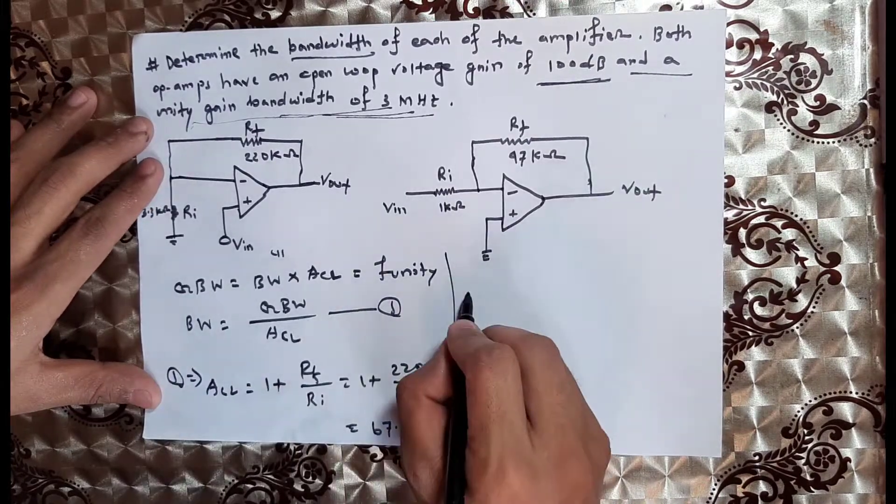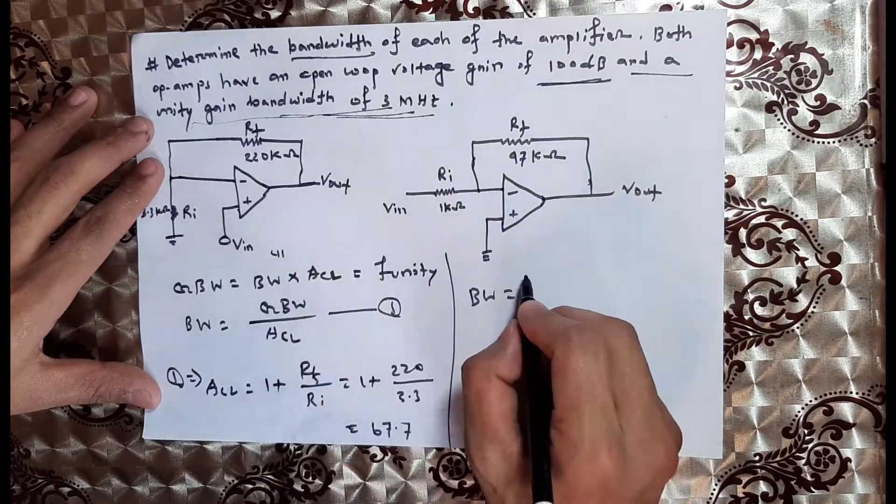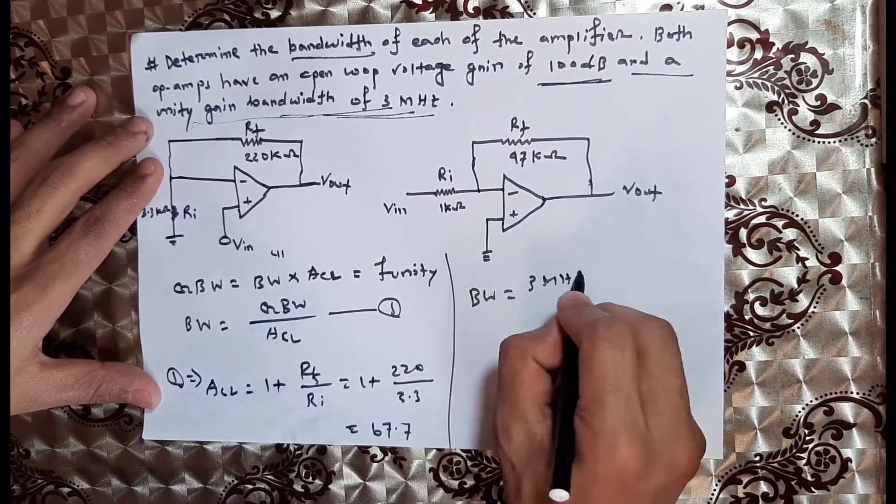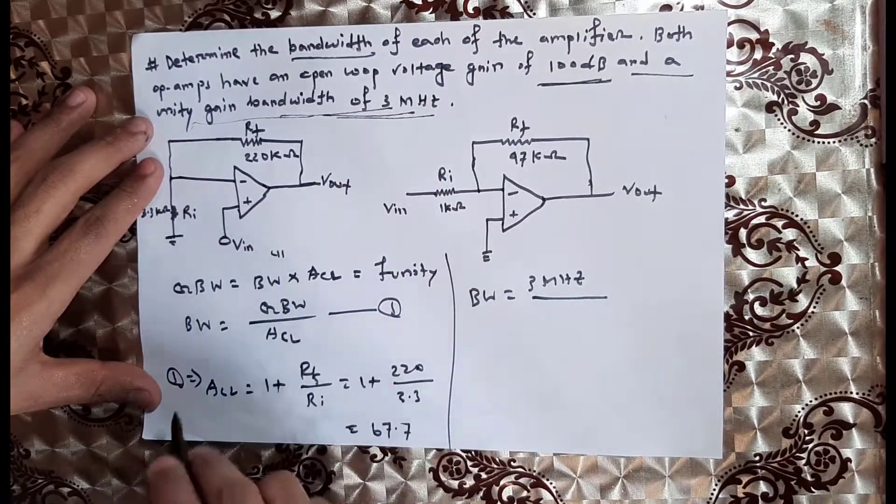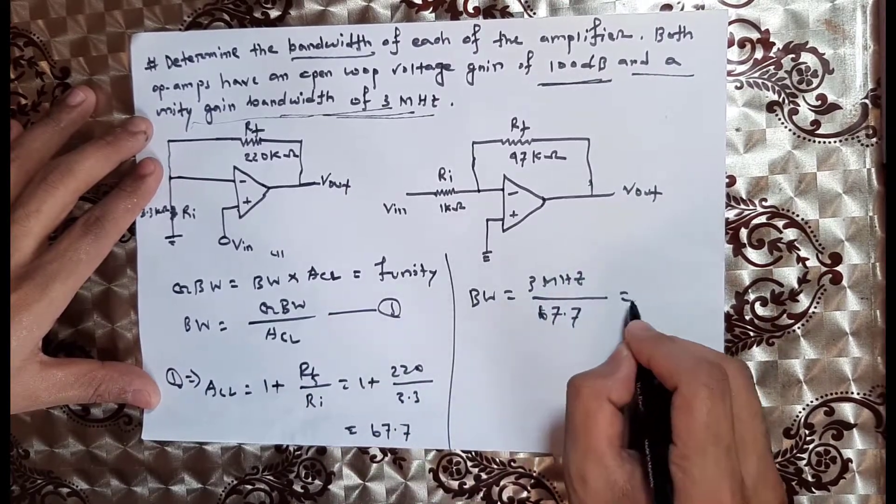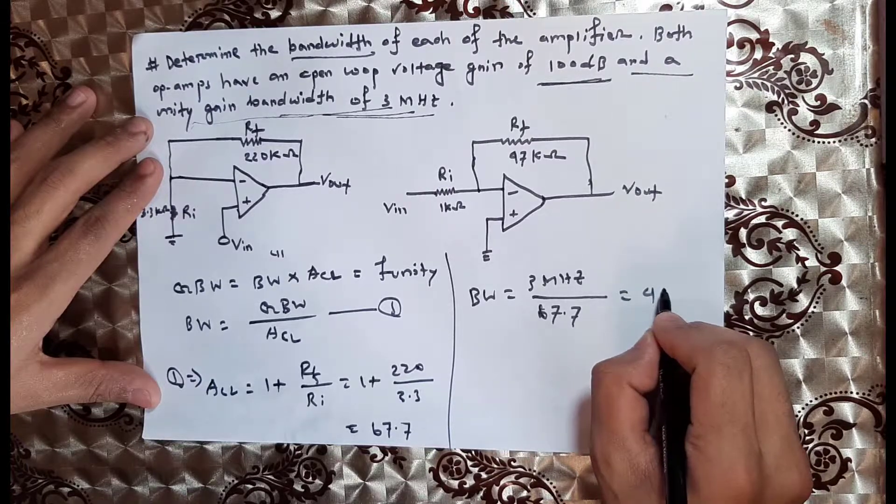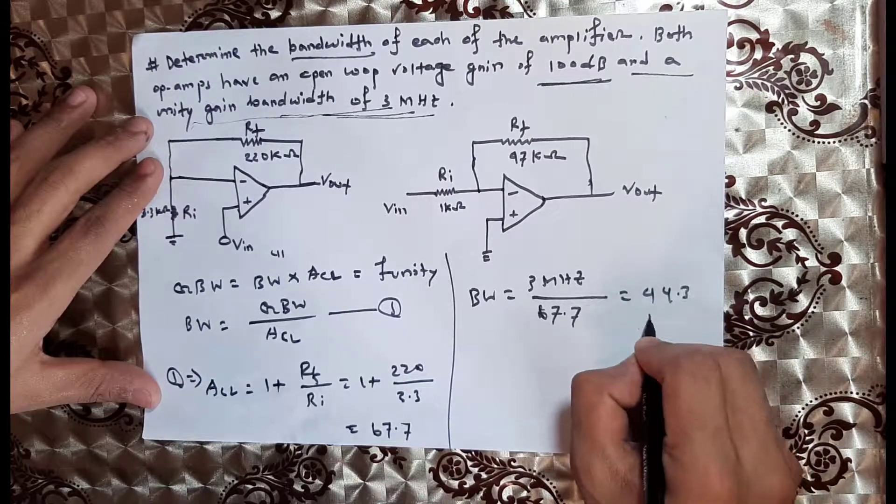The bandwidth is 3 megahertz divided by 67.7, which equals 44.3 kilohertz.